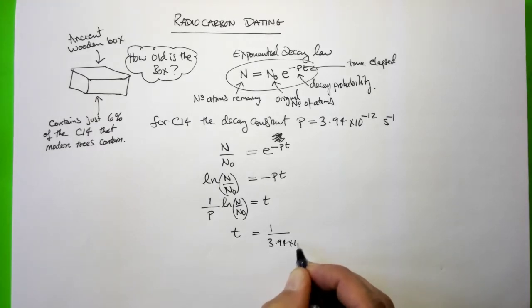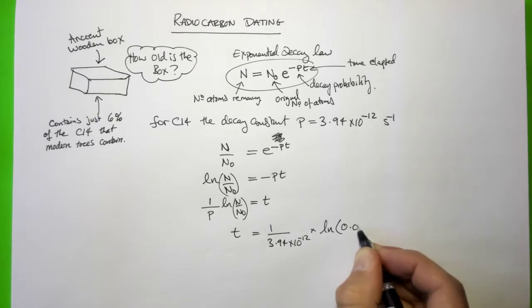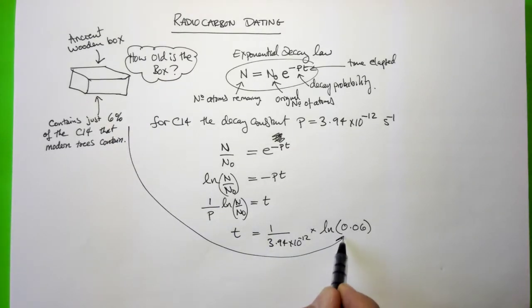3.94 times 10 to the minus 12, remember that's in per second, times the log of 6%, 0.06. That's where the 6% came from. And then if you put this into your calculator...